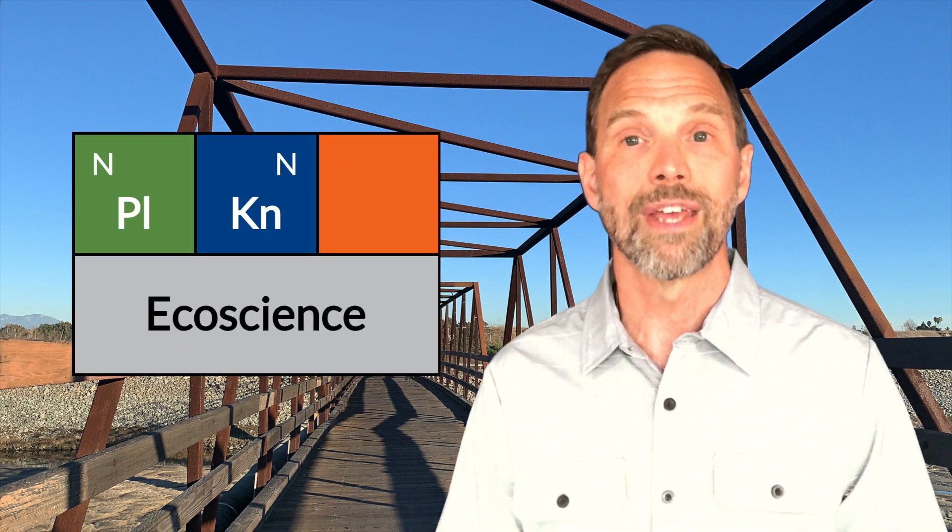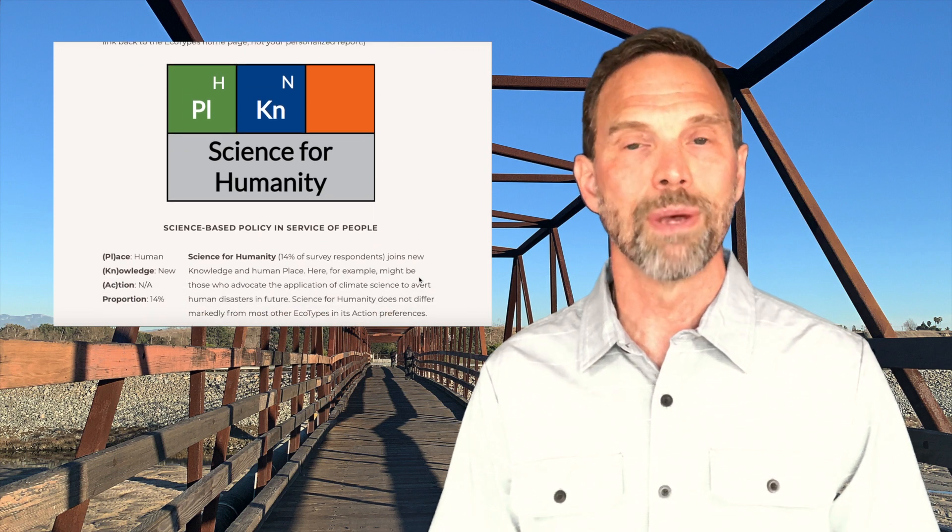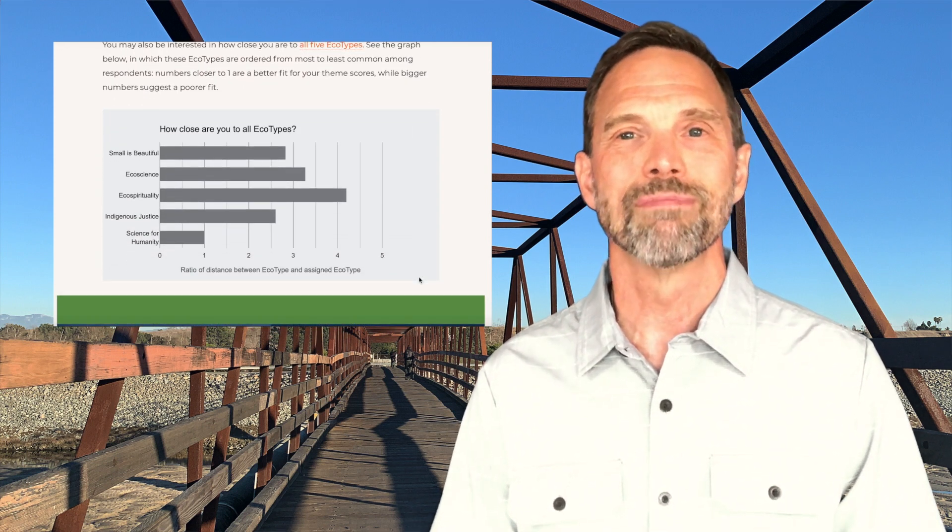Finally, Ecotypes. The three major themes of place, knowledge, and action relate to each other in particular ways, yielding five predominant Ecotypes, also determined by statistical analysis. These five common clusters of student responses are typified by names such as Small is Beautiful, Ecoscience, and Indigenous Justice, each like and unlike the others in important ways with respect to the three Ecotypes themes. Your survey report will tell you which Ecotype fits you best as well as how close you are to all five Ecotypes. Each Ecotype has important strengths and shadows, given that they represent a particular take on the contradiction and paradox defining place, knowledge, and action. Each of us can thus envision, via our own Ecotypes, room for growth, and by understanding the Ecotypes of others, we can better engage across those differences.